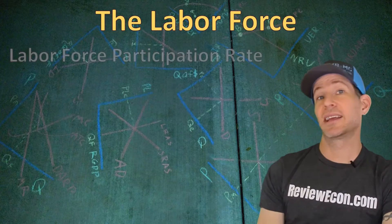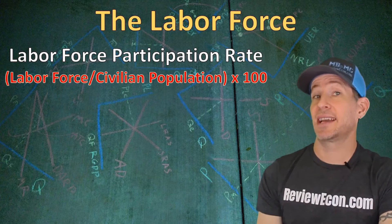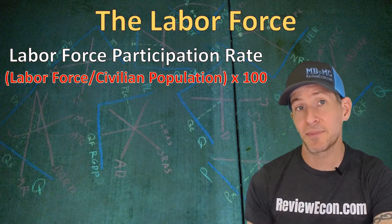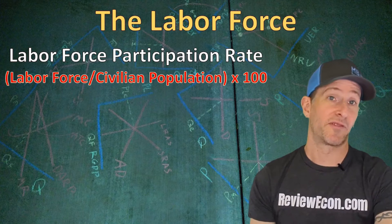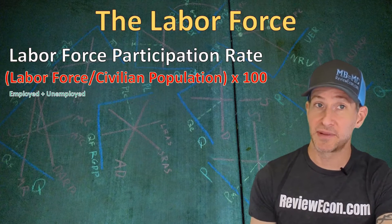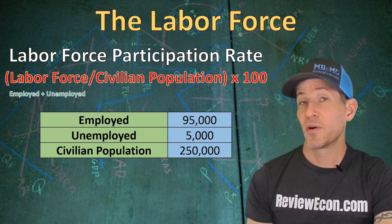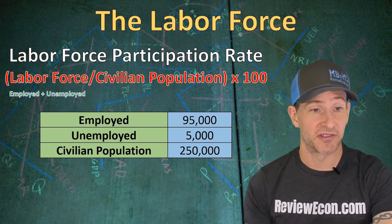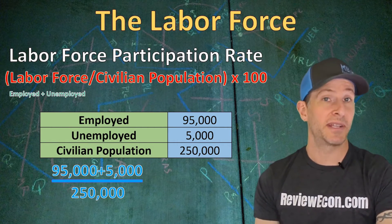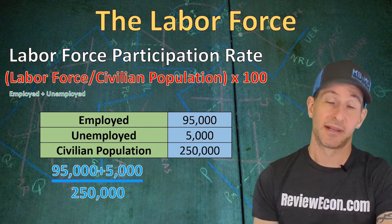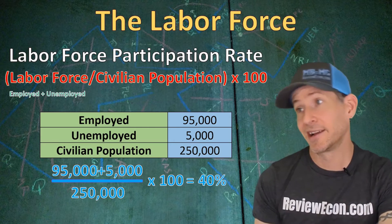You could also be asked to calculate the labor force participation rate on your exam. To find it, take the number of people within the labor force and divide it by the entire civilian population, then multiply by 100. For example, with a labor force of 100,000 people and a civilian population of 250,000, that gives us a 40% labor force participation rate.